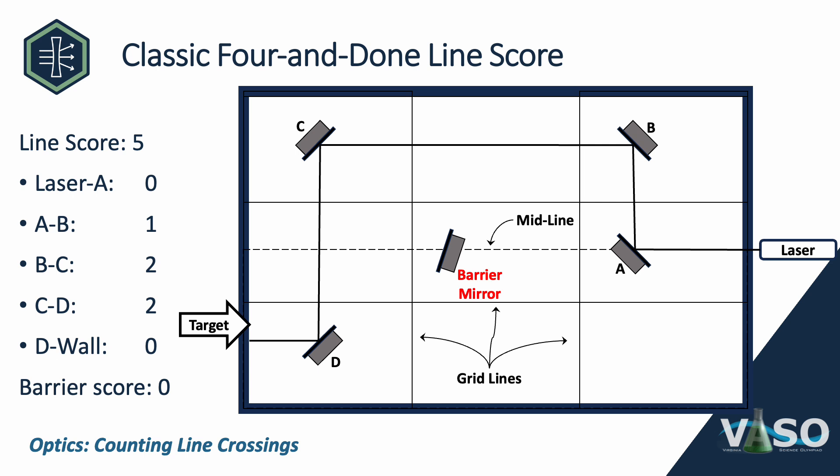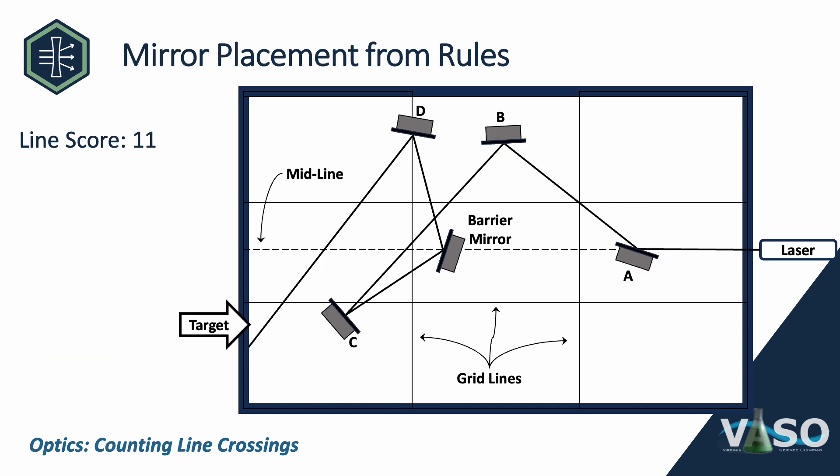The total line score is five crossings. The barrier mirror was not used, so the barrier score is zero. The combined line and barrier score is five out of a possible 30 points, which is perfectly valid but not a great score. Now we're going to look at a different configuration — this mirror placement is actually in the rules, on the last page, and I've lifted it verbatim to talk about how it scores.